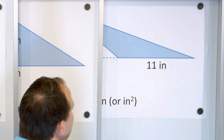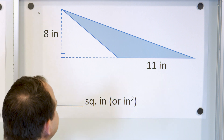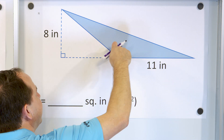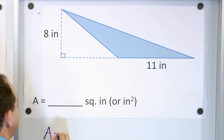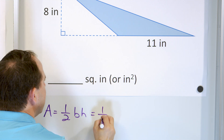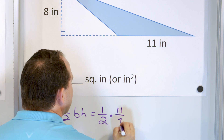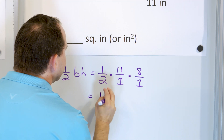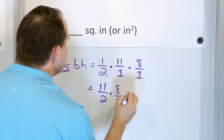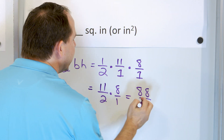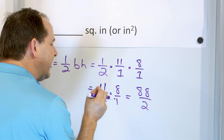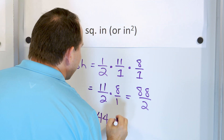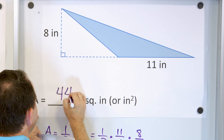Now here is the oddball type of triangle — but it's the same approach. We want to find the area of the shaded region in blue. We identify the base as 11 and the height — the distance from the base all the way up to the tippy top — as 8. So the area is one-half times 11 over 1 times 8 over 1. One times 11 is 11, two times 1 is 2. Then 11 times 8 is 88 over 2. 88 divided by 2 is 44. The area is 44 square inches.